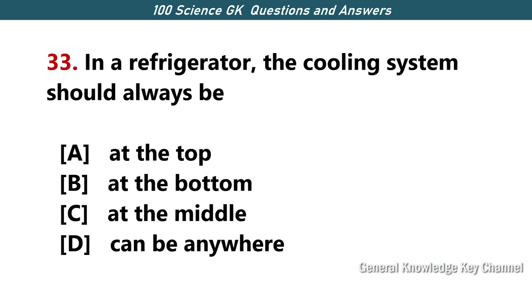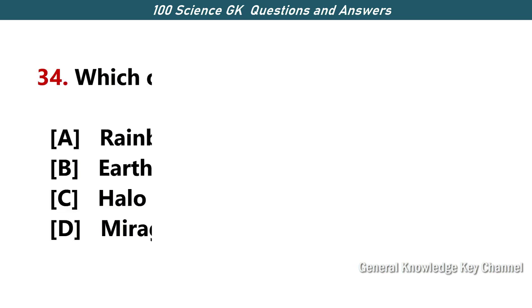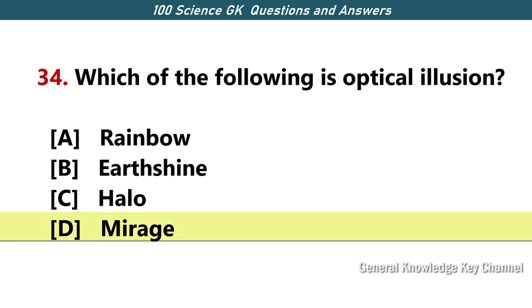In a refrigerator, the cooling system should always be — Answer B — at the bottom. Which of the following is an optical illusion? Answer D — mirage.